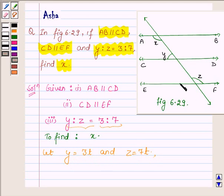Now let us see this figure and name this angle as U. Since CD is parallel to EF, angle U will be equal to angle Z since they are alternate interior angles. Z is 7T, therefore U is also equal to 7T.